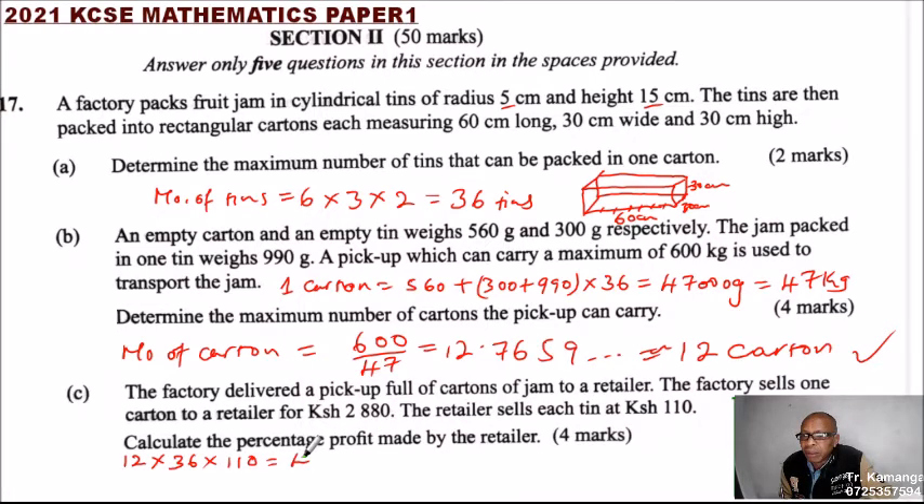of money that was made by the retailer with the 12 cartons of jam that were delivered in the pickup. The factory sells the carton at 2,880, so because there are 12 cartons, you multiply by 2,880 to find the amount that the retailer had to pay to the factory. So we multiply 12 times 2,880, and that should give you 34,560.